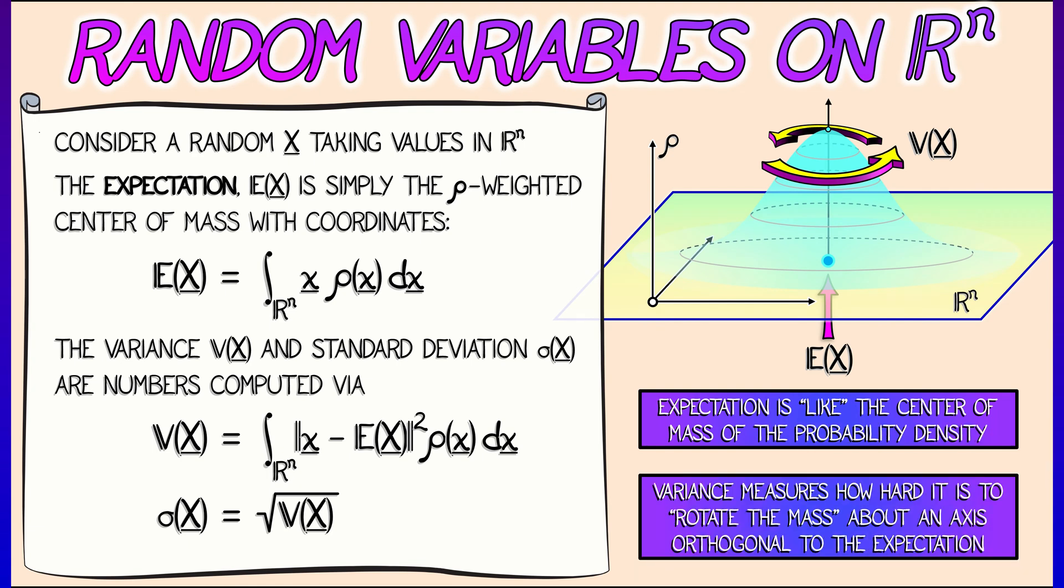If you think of expectation as a center of mass and variance as something like a moment of inertia, how hard it is to rotate that probability mass about an axis going through the expectation, then that sort of mass analogy carries over into n dimensions as well.